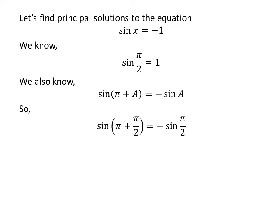Application of the above identity gives us sin(π + π/2) = -sin(π/2). As π + π/2 = 3π/2, and plugging the value of sin(π/2) gives us sin(3π/2) = -1.